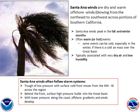Santa Ana winds are warm, dry offshore winds that affect southwestern California when the conditions are right. Offshore means that the winds blow from the northeast to southwest across the area. Santa Ana winds peak in the fall and winter months, although they have been known to occur in the spring and summer months as well.